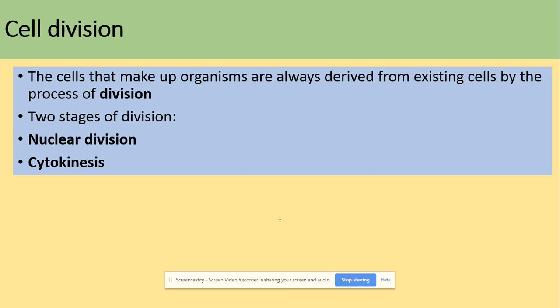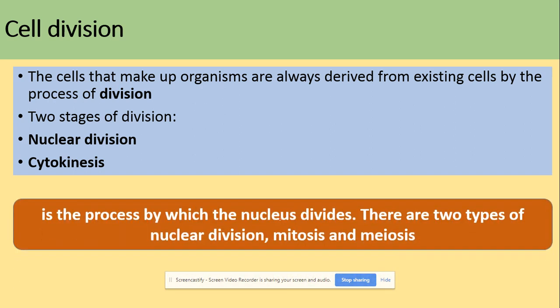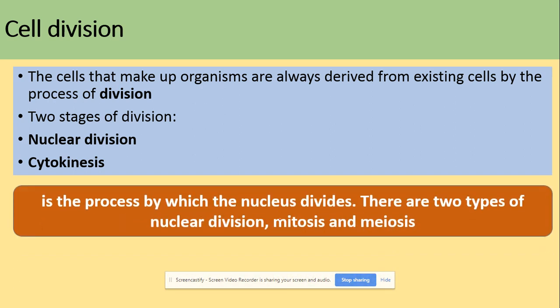In terms of the processes of division, the cells that make up organisms are always derived from existing cells by the process of division, which is divided into nuclear division and cytokinesis, the division of the cytoplasm. This is the process by which the nucleus will divide.